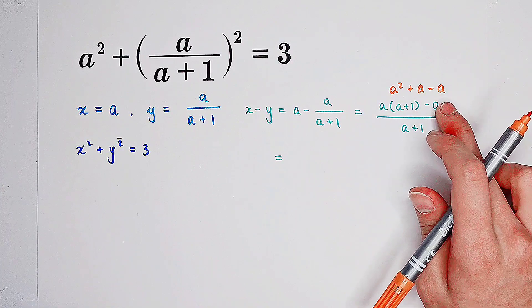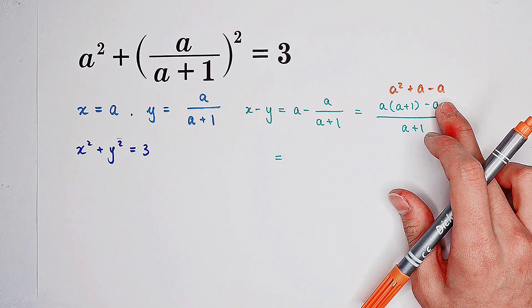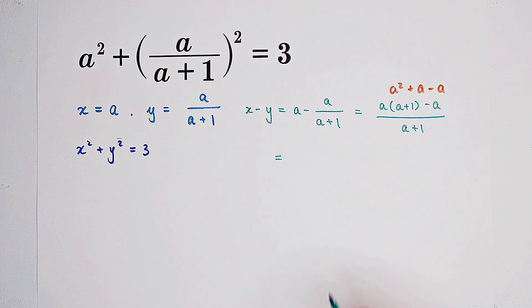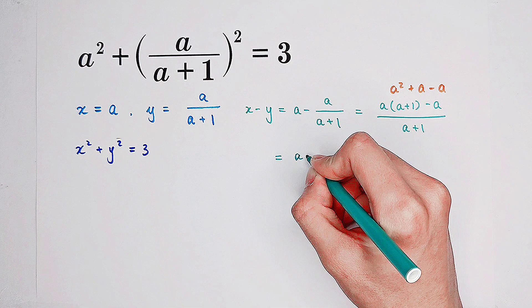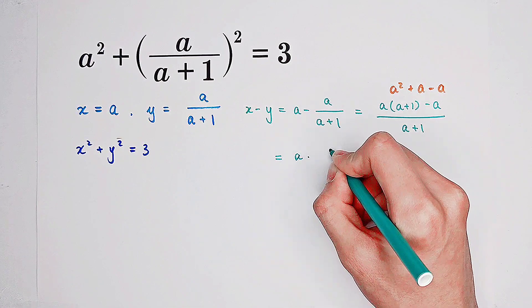We have a squared plus a then minus a and this plus a minus a will cancel out each other. We will end up with a squared on the numerator.